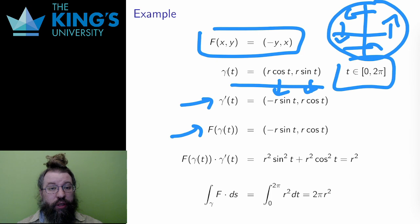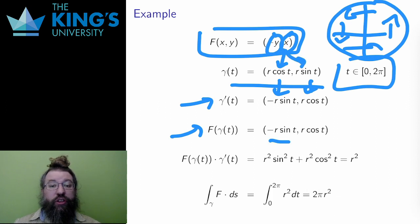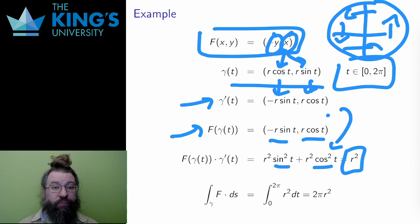I take the field and replace any x by the first component of the curve, and any y by the second component of the curve. Then I take the dot product of these two vectors, which is r² sin²t + r² cos²t, which is just r² because sin² + cos² = 1.